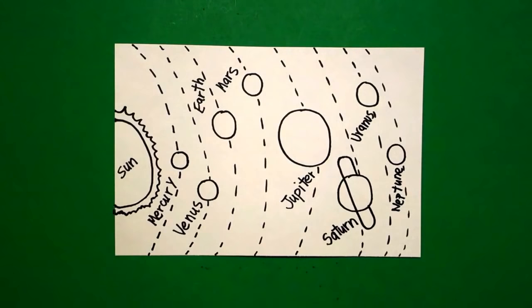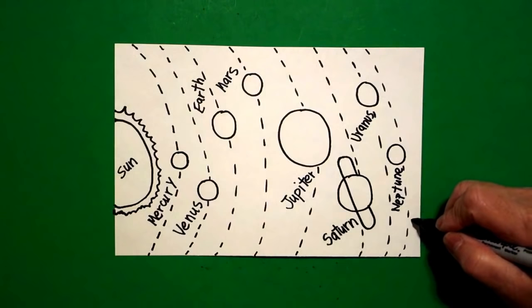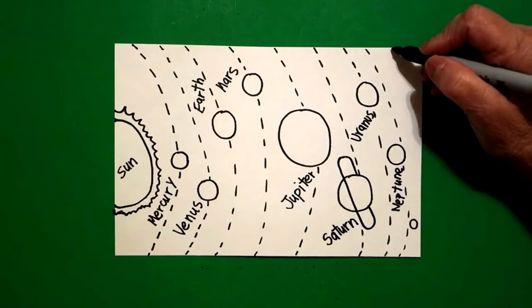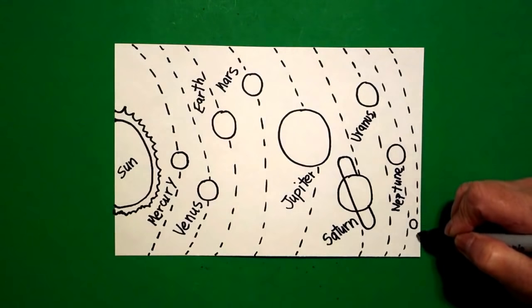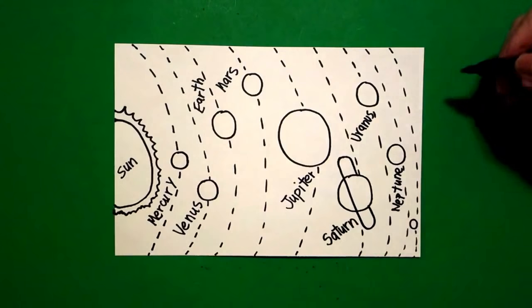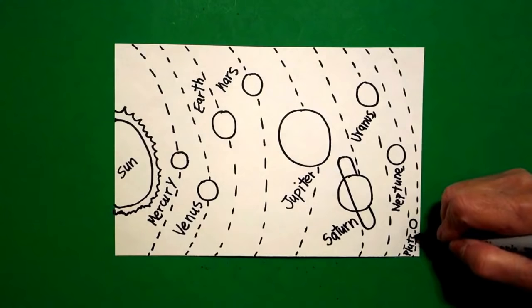Now the last one, put a little baby circle. Let's put it right here. And this is going to be Pluto. So I come all the way back up and do my orbit. Jump over. And now I can write the word Pluto. P-L-U-T-O.